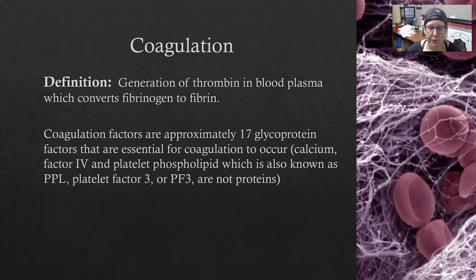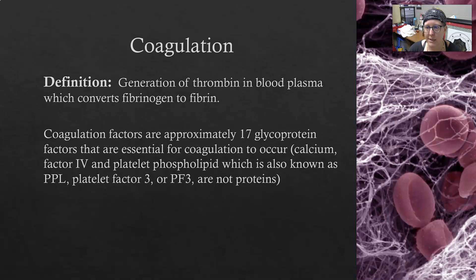Coagulation, as a portion of hemostasis, is the generation of thrombin in blood plasma, which converts fibrinogen to fibrin. Fibrin is the mesh part of the clot, and that mesh forms around the platelets and traps red cells, effectively plugging the damaged area.